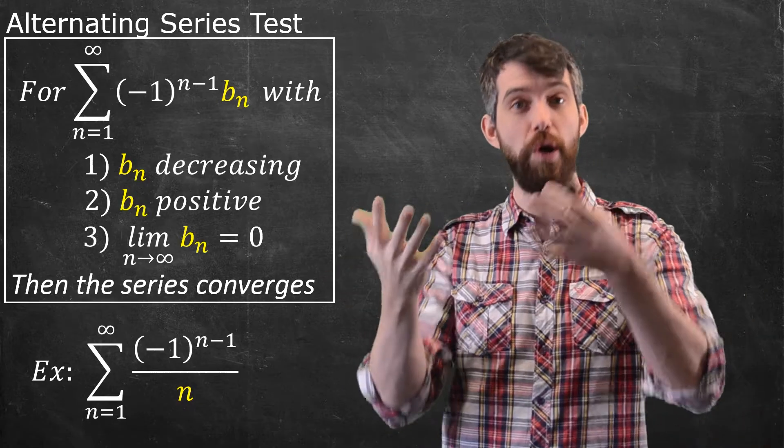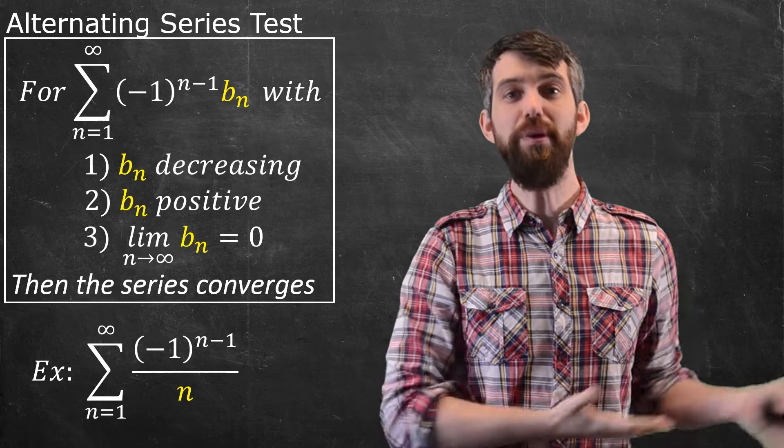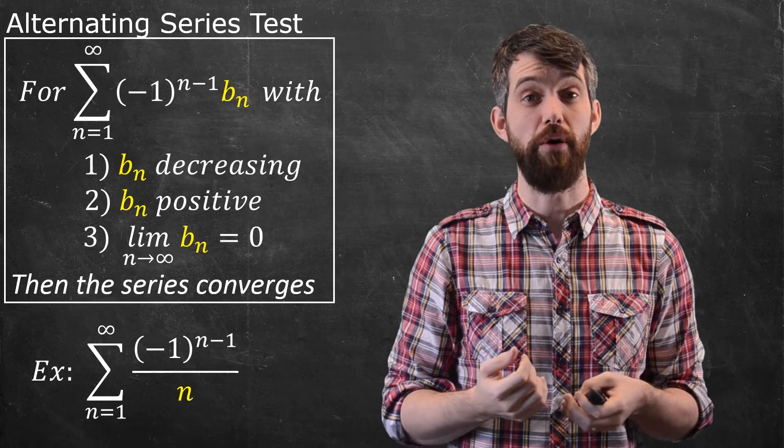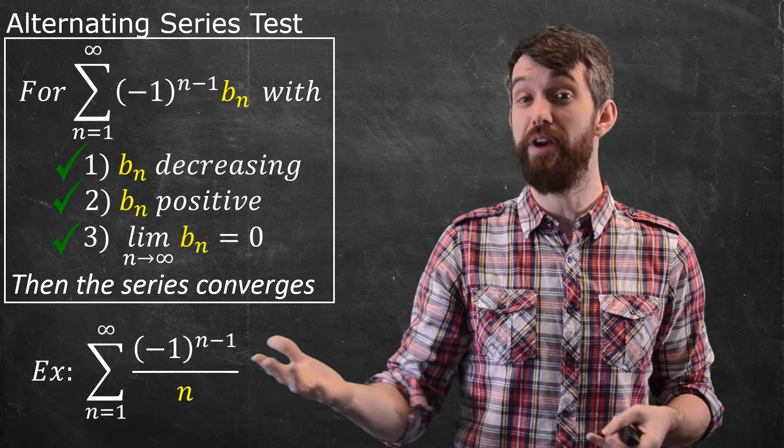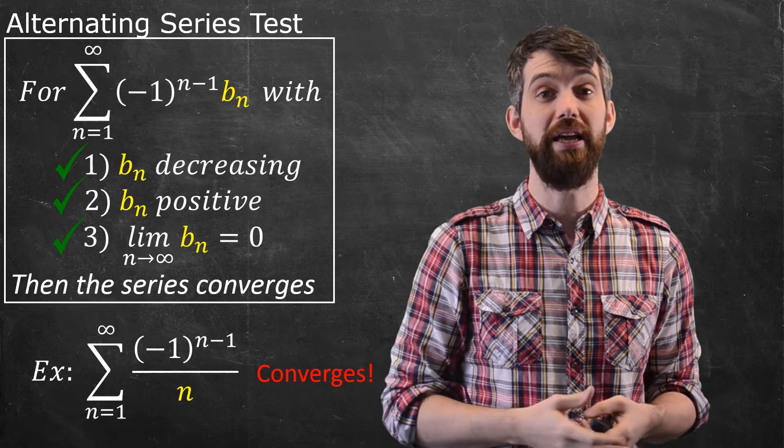As n gets larger, 1/n gets smaller, and lim(1/n) = 0. This satisfies all three conditions of the alternating series test, so we conclude it converges.